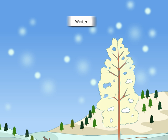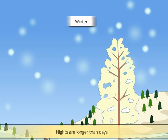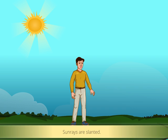During the winter season in India, which is generally from the month of November to February, the upper half of the Earth is tilted away from the Sun. As a result, the nights are longer than the days and the Sun remains in the sky for a shorter duration. The Sun rays fall slanted on the upper half of the Earth, so less light and heat reach this part.